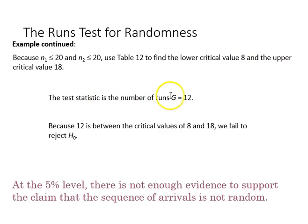Our test statistic is the number of runs, so that's 12. Because 12 is between the critical value of 8 and 18, we fail to reject the null this time. So at the 5% level there is not enough evidence to support the claim that the sequence of arrivals is not random.